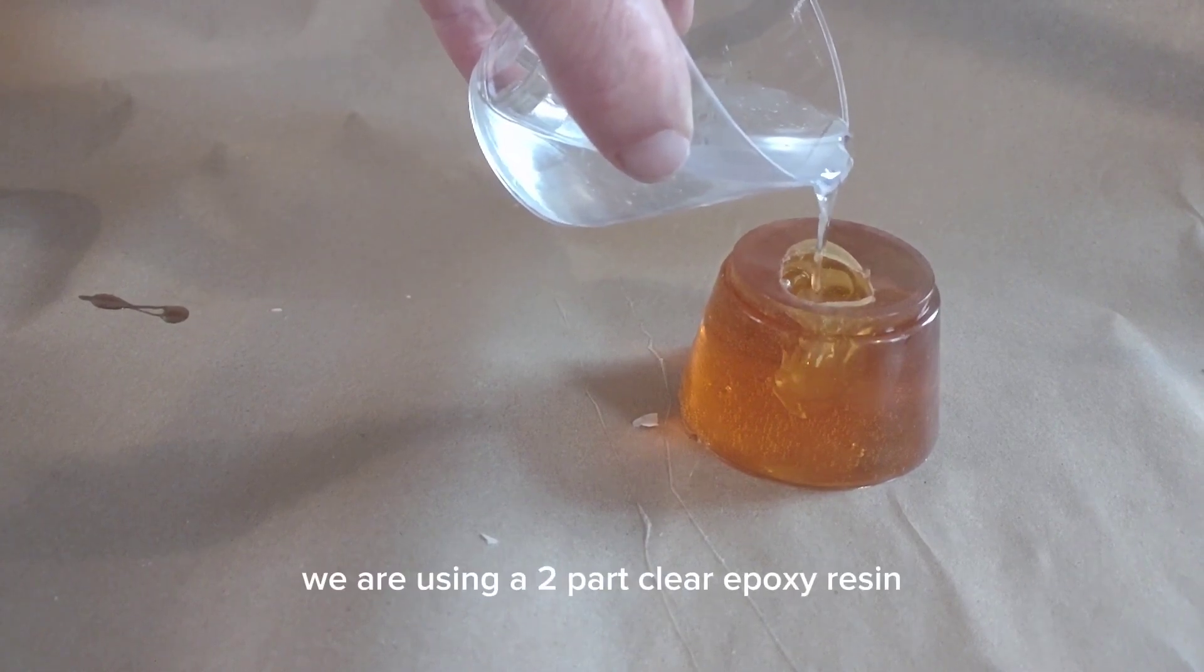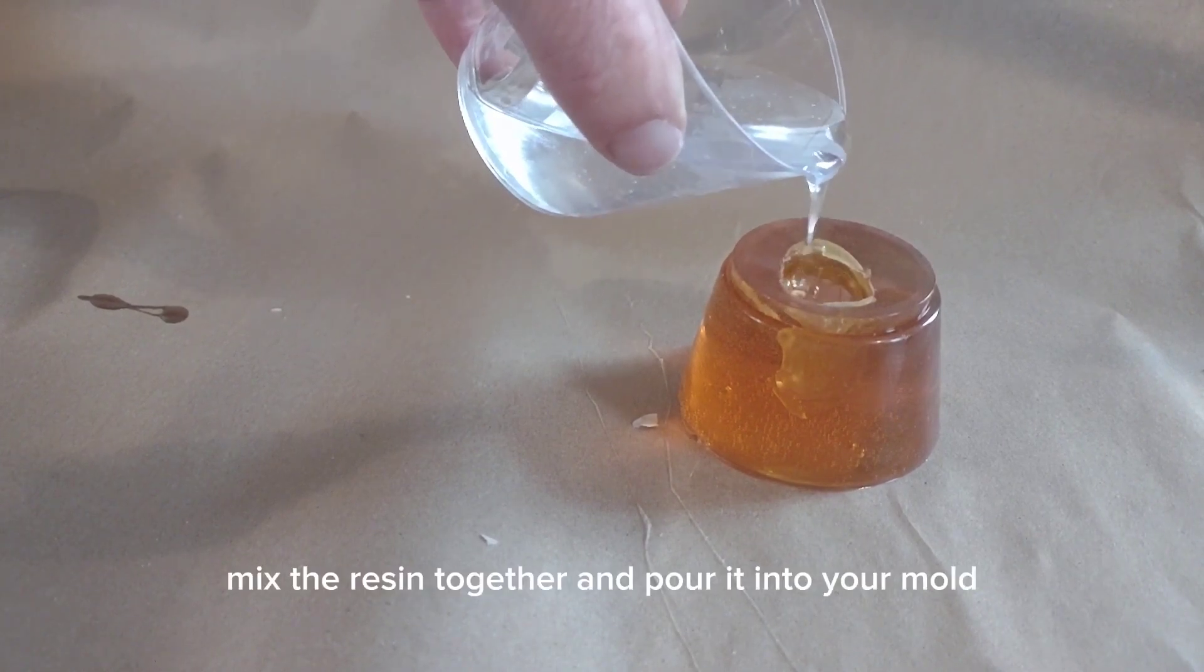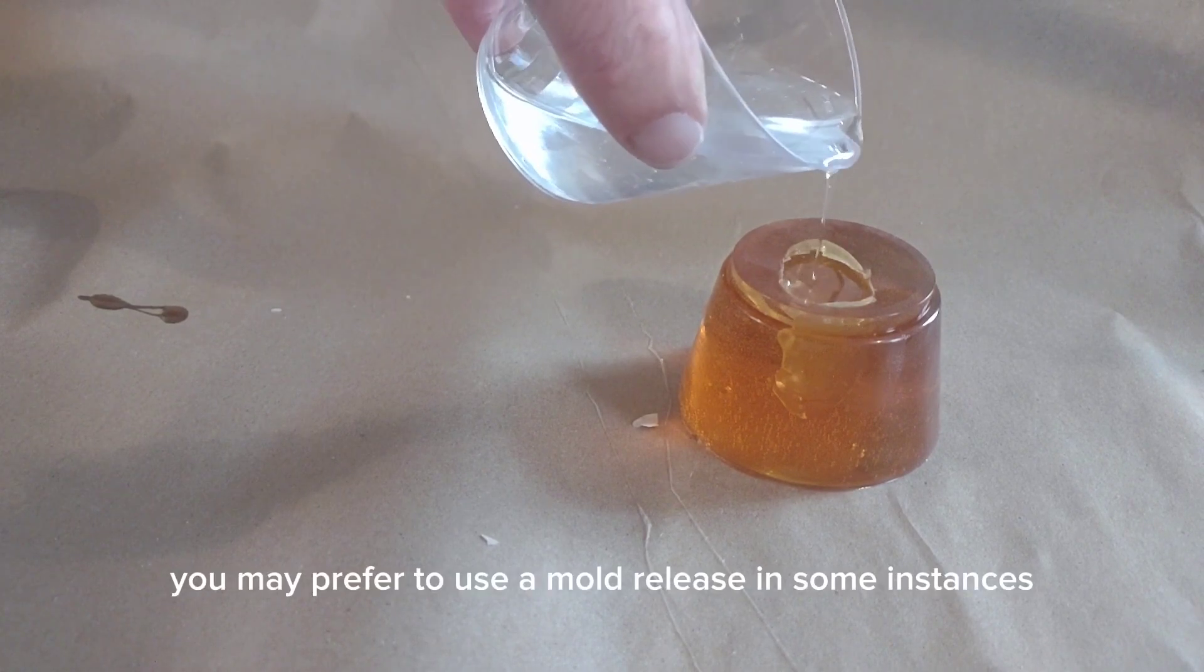For this example, we are using a two-part clear epoxy resin. Mix the resin together and pour it into your mold.